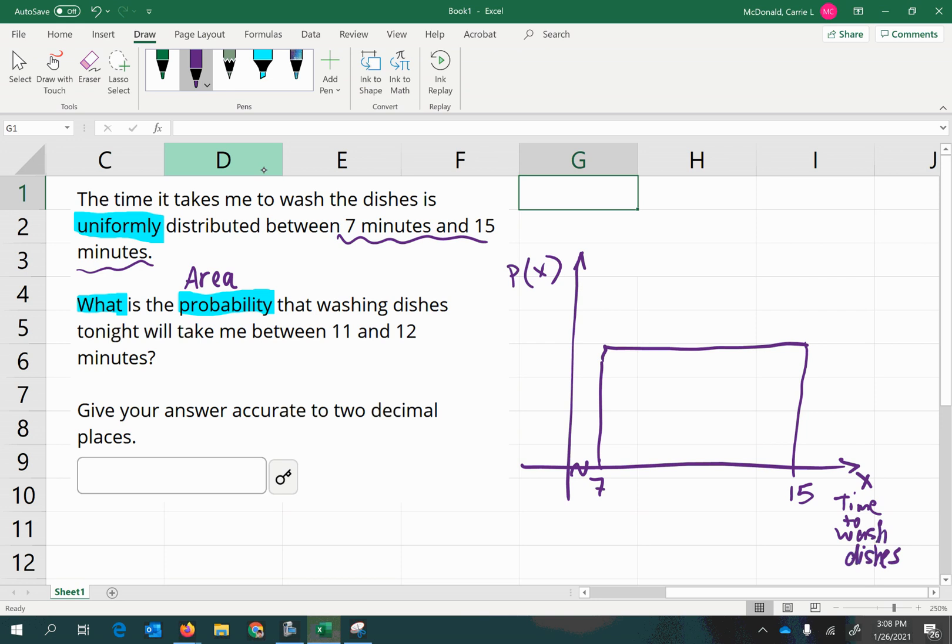So remember, when you shade in underneath the density curve, that whole shaded region is altogether an area of 1. It covers all the possible numbers of minutes it could take me to wash the dishes. But that's not what we're interested in, although we use it to figure out what the height of our rectangular region is.